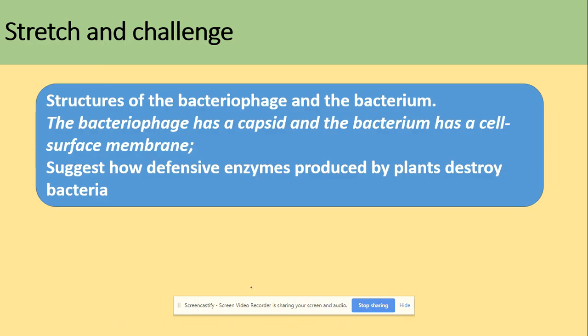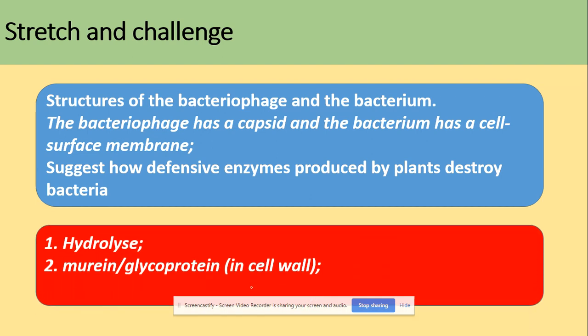So we've got here a question. Suggest how defensive enzymes produced by plants destroy bacteria. Bacteriophage has a capsid and the bacterium has a cell surface membrane. What we can say, they will hydrolyze the cell wall, which obviously is made of murein.